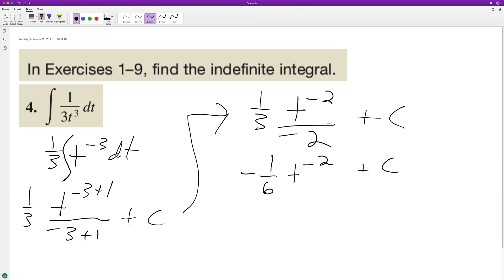All right we can take the derivative of this to test it out. So we get negative negative 2 over 6 t raised to the negative 3 because we subtract 1 from the exponent there and the derivative of c is 0.